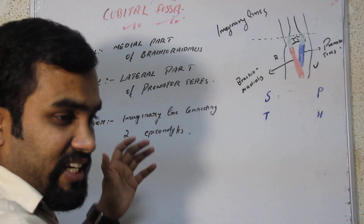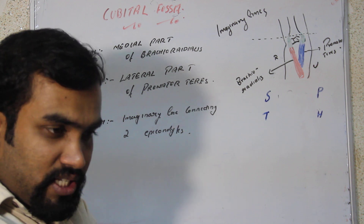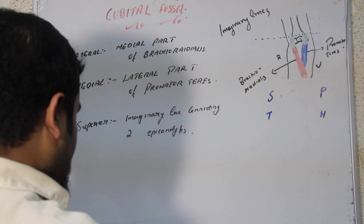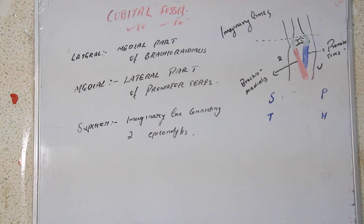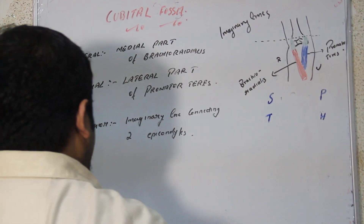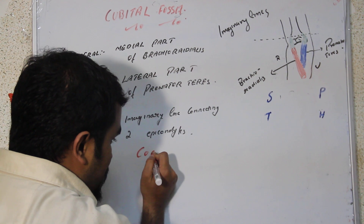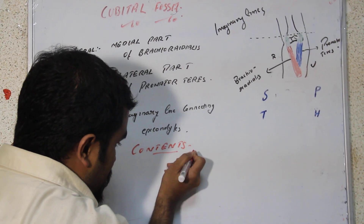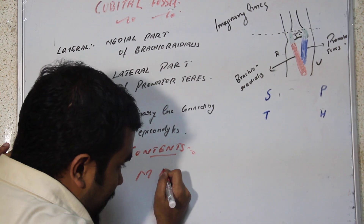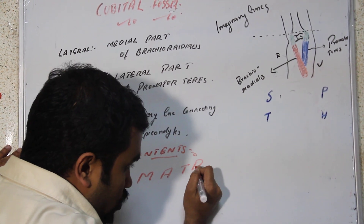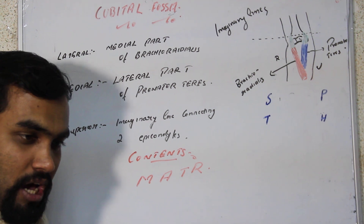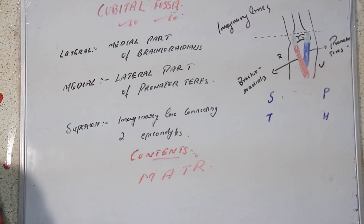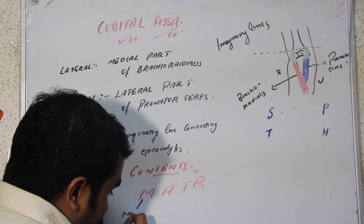Now, what structures are present inside the cubital fossa? We have a mnemonic to study that: remember MATR — M-A-T-R. The contents of our cubital fossa can be remembered as 'matter.' M is for the median nerve.